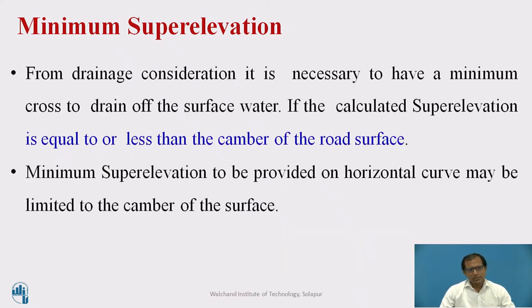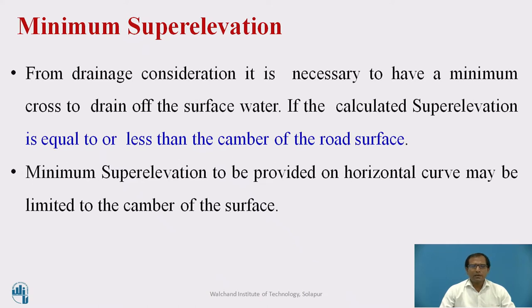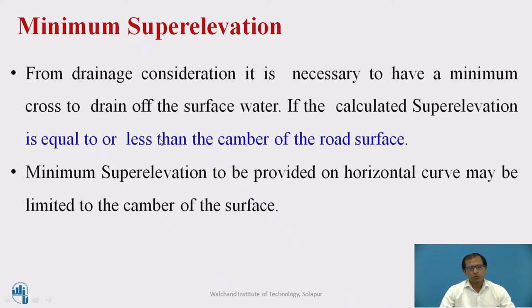Considering the drainage aspects, whenever the radius increases — like 2000 or 4000 meters — there might be no requirement for any super elevation. But whenever the super elevation comes lesser than the camber value, it is suggested that you provide super elevation equal to the camber value. For bituminous roads, it is 2.5%. So even though there is no requirement for super elevation, we must provide a minimum super elevation of 2.5%, equal to the camber value.